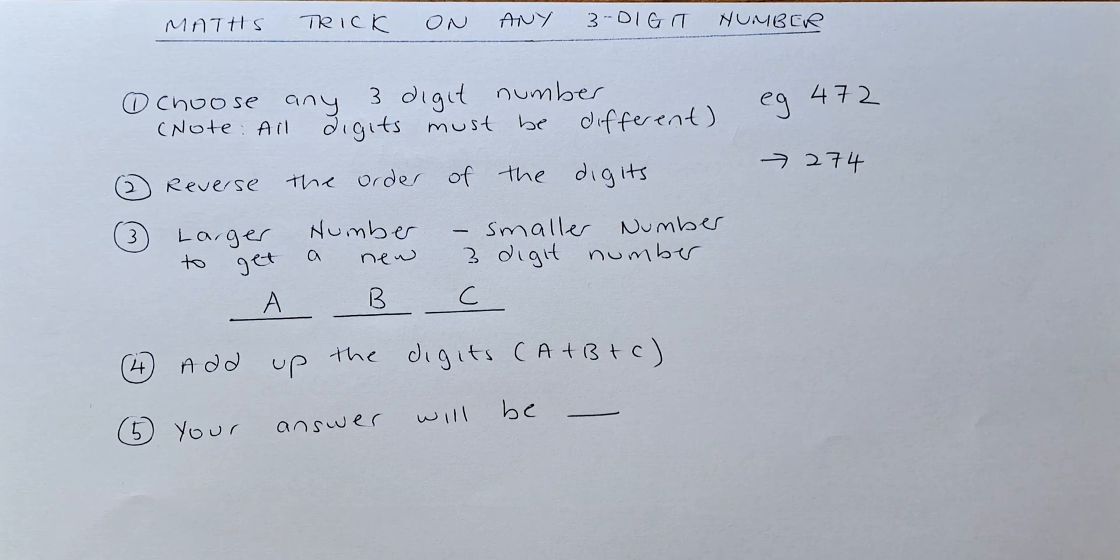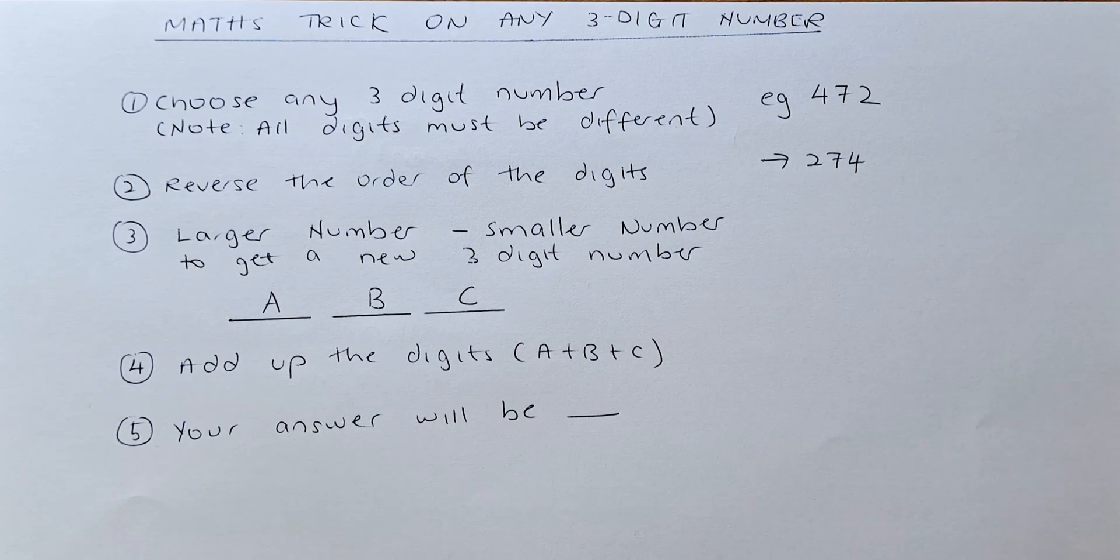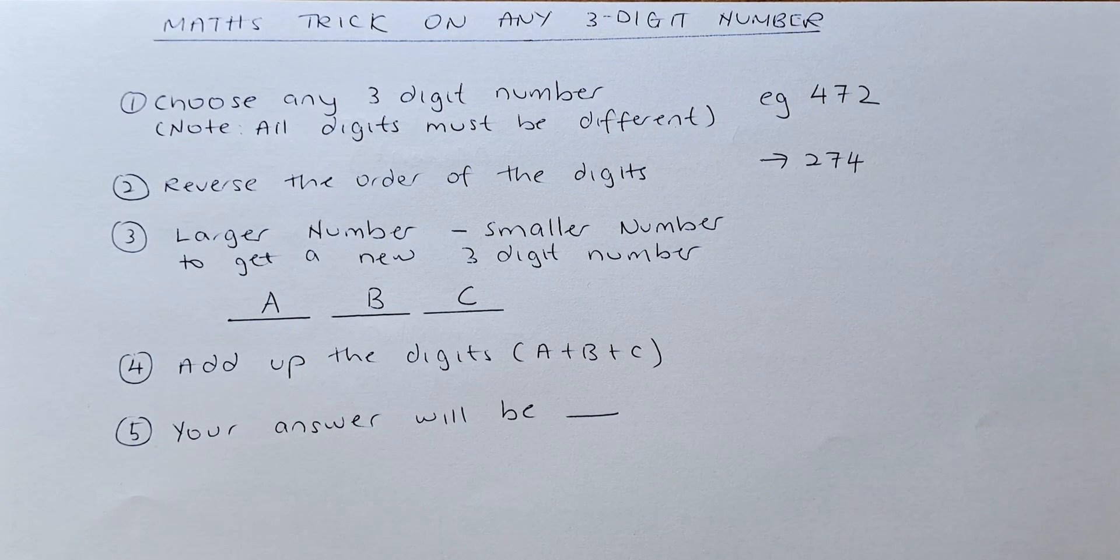You can do it manually or you can put it in your calculator. And you are going to get another 3-digit number. And we are going to call them A, B and C.